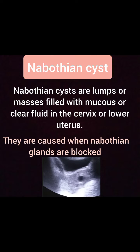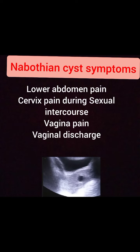So this is the case of Nabothian cyst of the cervical canal or lower uterus. You can see those anechoic black structures in the lower uterus.